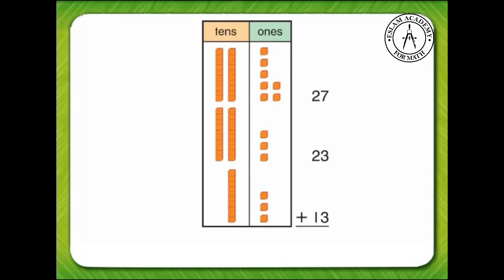There are two ways we can solve the problem. One way is to make a 10. Seven 1s plus three 1s equals 10. Ten and three 1s equals 13 1s.